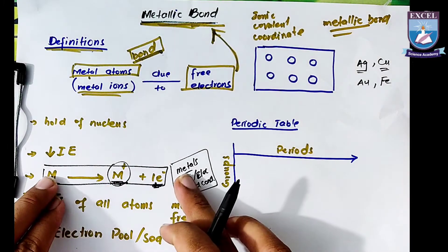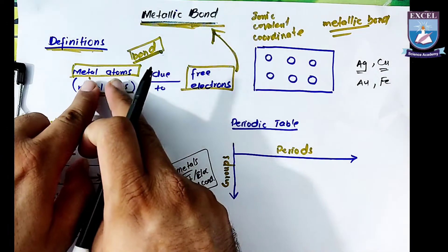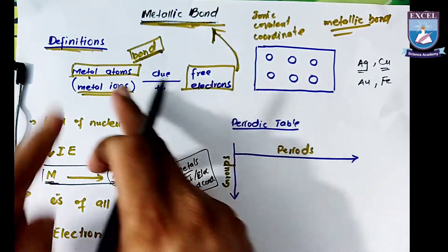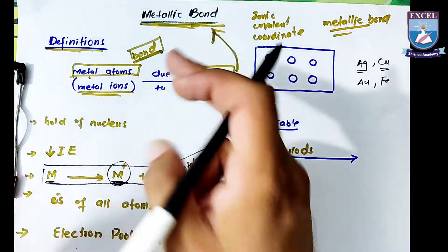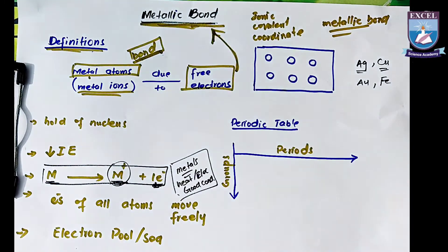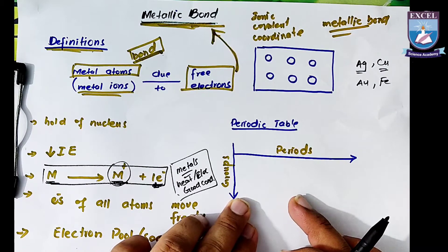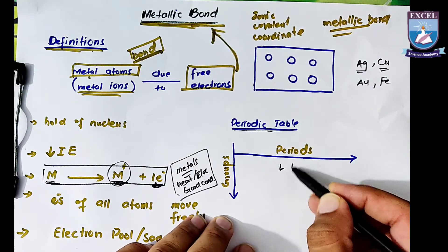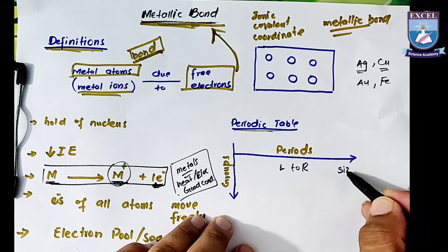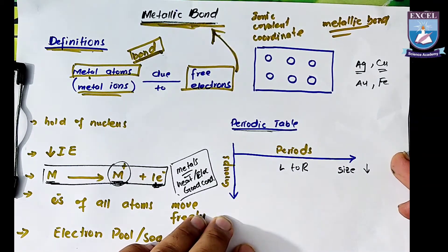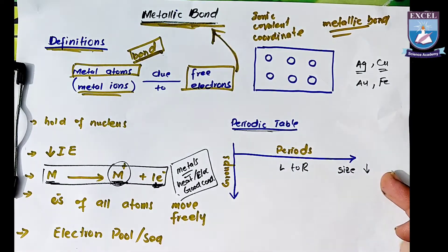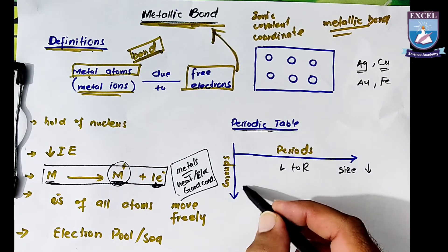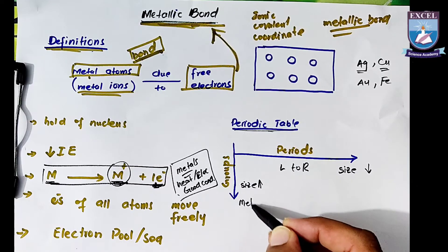Metal atoms form free electrons, which create the metallic bond. We have studied in unit number 3 which are groups and periods. When we move left to right across a period, atomic size decreases. The right side of the periodic table has smaller atomic size, while the left side has bigger atomic size — and metals are on the left side, so their size is bigger.